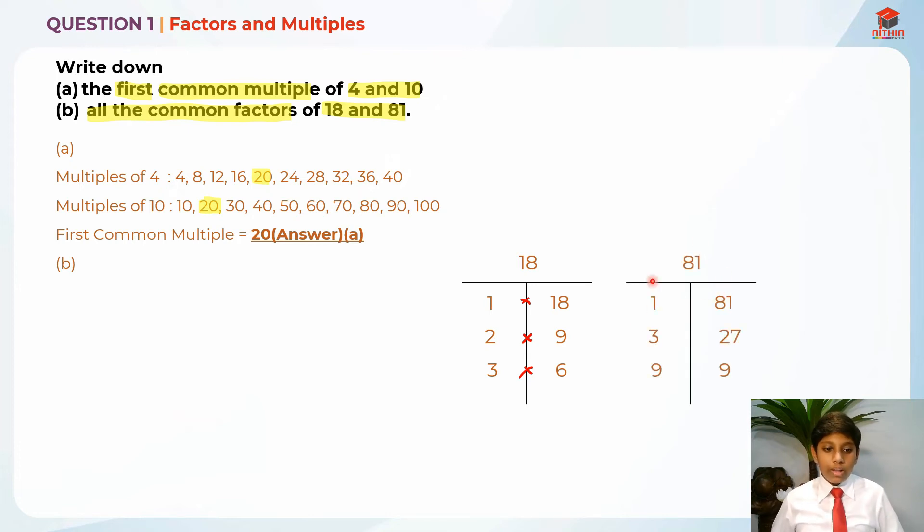So 81. Like I said, this line represents the times. So 1 times 81 is equal to 81. So 1 and 81 are factors of 81. 3 times 27 is equal to 81. So 3 and 27 are factors of 81. 9 times 9 or 9 squared is equal to 81. So 9 is a factor of 81.